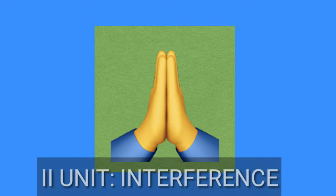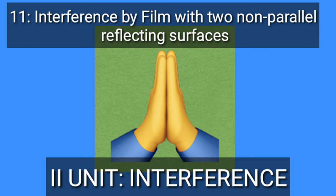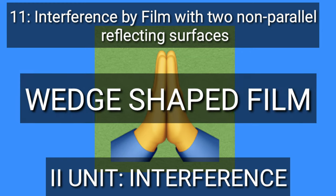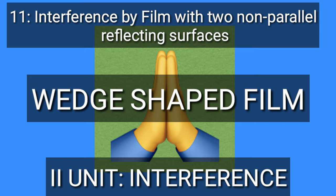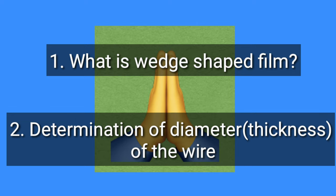Hello everyone, welcome to the next topic — topic 11 in the second unit: Interference. This topic is named interference by a film with two non-parallel reflecting surfaces, also called a wedge-shaped film. In this topic, we will discuss what a wedge-shaped film is and, from this system, calculate the determination of the diameter of a wire. Let's begin the topic.